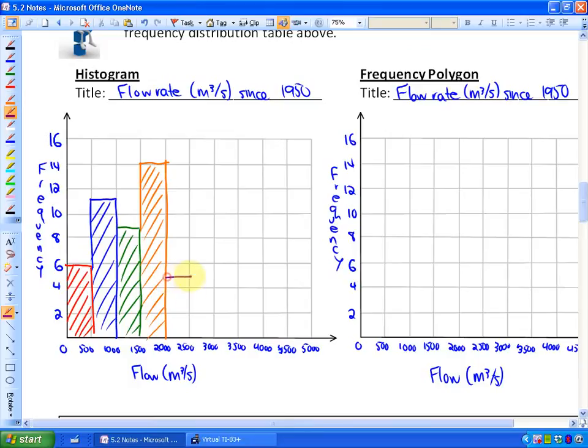Then we have 5, 1, 3, 0, 0 and 1. So this is the bar graph that relates and a visual representation of the flow rates in those years.